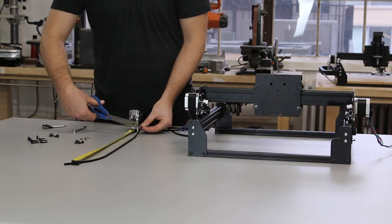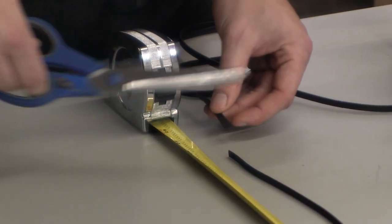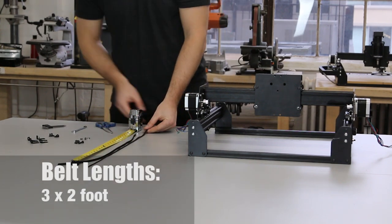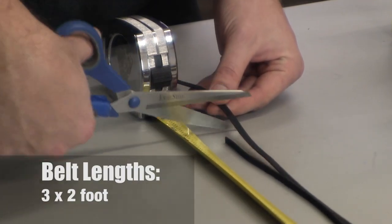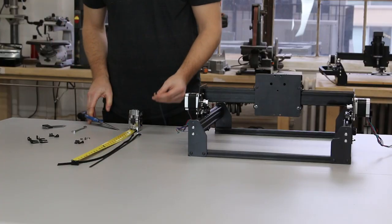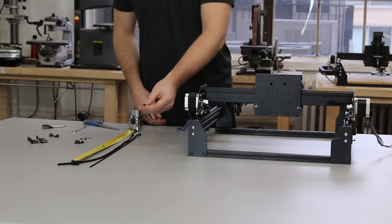You'll want to cut the GT2 belting that came with your kit. We're going to cut three equal lengths of two feet. They don't need to be very exact, just try to get them as close as you can. You'll see later that we have plenty of slack in each belt for adjustment.